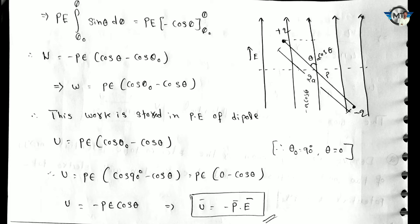We change the terms. This work done is stored as the potential energy of the dipole. We set theta naught equal to 90 degrees and theta equal to the required angle. Since cos 90 is 0, we get U is equal to pE into 0 minus cos theta. Therefore U is equal to minus pE cos theta. And we know U bar is equal to minus p bar dot E bar.